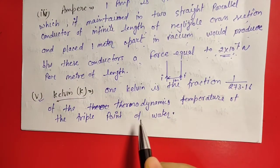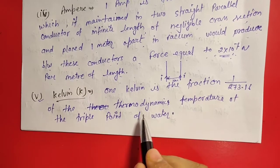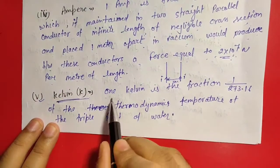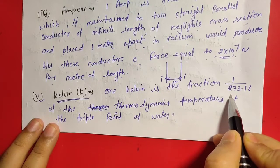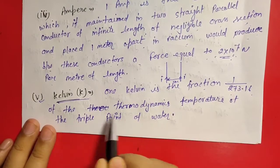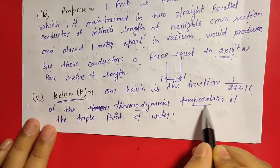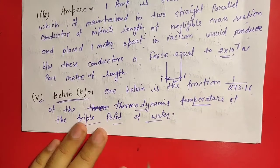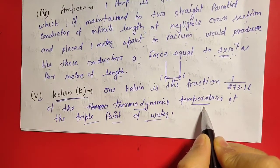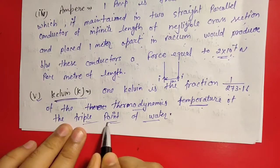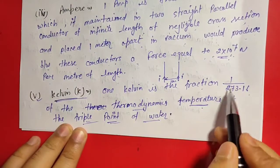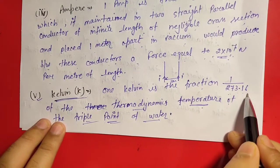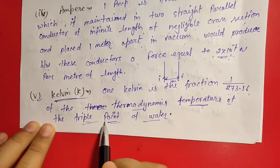Next, Kelvin is a unit of thermodynamic temperature. One Kelvin is the fraction 1/273.16 of the thermodynamic temperature of the triple point of water. The triple point of water is the temperature at which water coexists in all three states — solid, liquid, and gas — simultaneously.